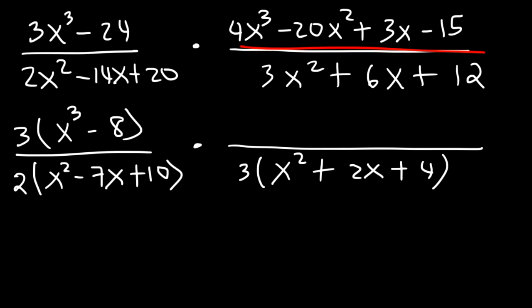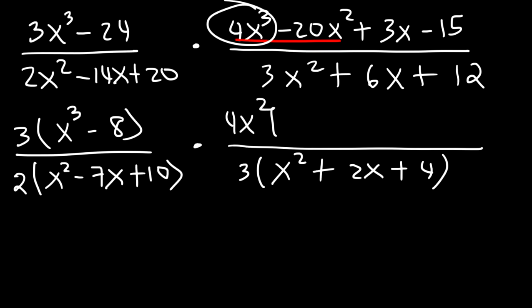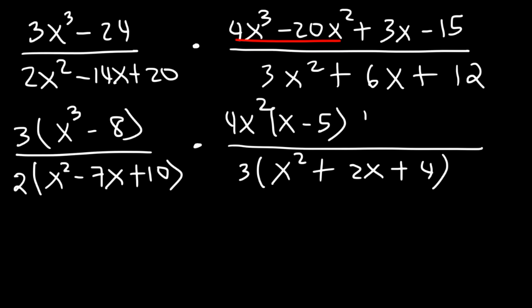For 4x³ minus 20x² plus 3x minus 15, notice we can factor by grouping. The first two coefficients have the same ratio as the last two. Take out GCF 4x² from the first two terms: 4x²(x − 5). Take out 3 from the last two terms: 3(x − 5). So this factors as (x − 5)(4x² + 3).